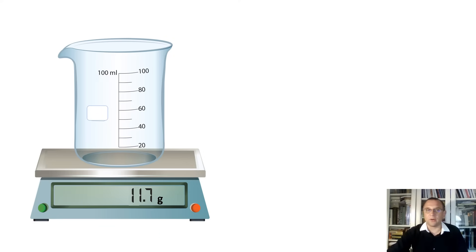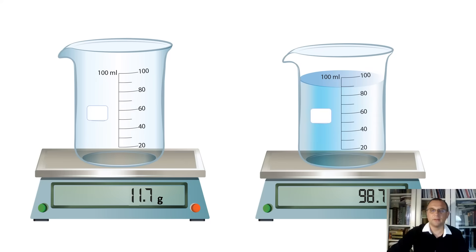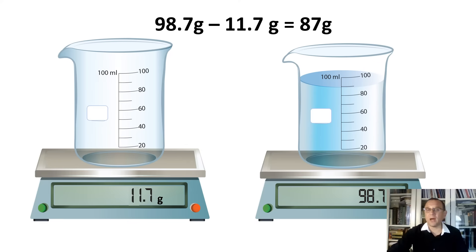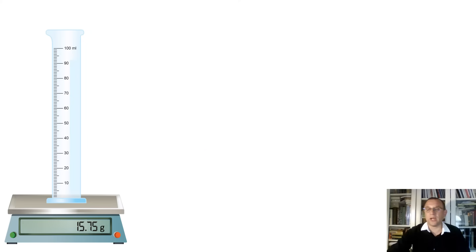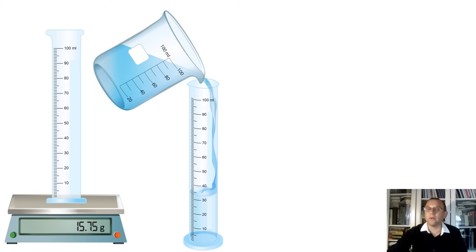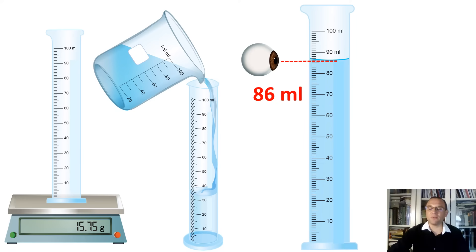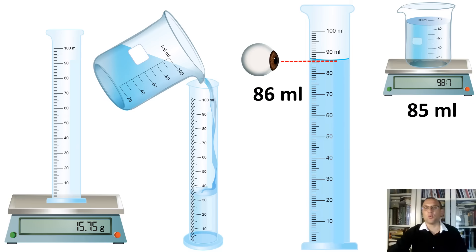Let's measure the mass of an empty beaker first — it is about 11.7 grams. Now we will weigh a beaker with some arbitrary volume of water. On the bigger graduation, you can see it is approximately 85 milliliters. To find the mass of water, we simply subtract the mass of the empty beaker from the mass of the beaker with water, and record these numbers. Now let's weigh the empty graduated cylinder, then pour all the water from the beaker into it to find the precise volume. The correct reading of the volume is at the lowest point of the meniscus — our first estimation of 85 milliliters was very close.